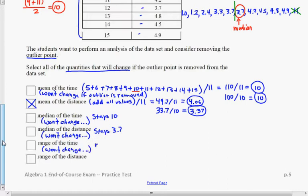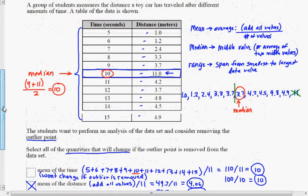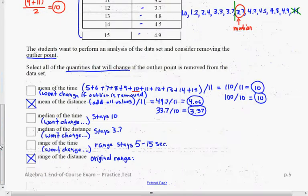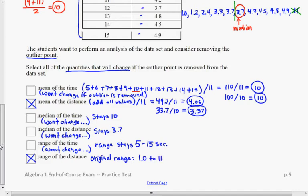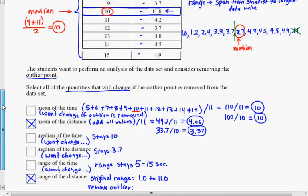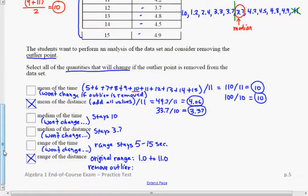But the range of the distance will change. Because originally, the range would have been, for the distances, the range started with the smallest value of 1.0 and the largest value, 11.0. And if you remove the outlier, then the range will start at 1.0, but then the next highest value is 4.9. So it will go from 1.0 to 4.9, which is a much smaller range.